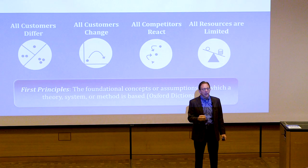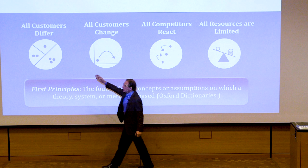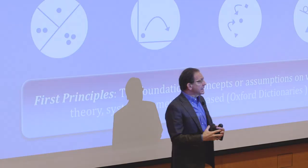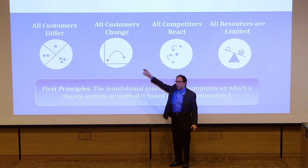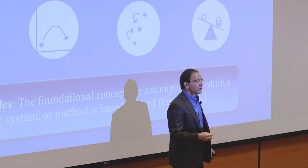The first principle: all customers differ, represented by a pie diagram with customers broken into different segments. The idea is that all customers you deal with are different, and all marketing strategy has to deal with addressing these different customers' needs. The second principle is that all customers change — not only are they inherently different, but over time their desires and needs shift. A marketing strategy has to deal with that.